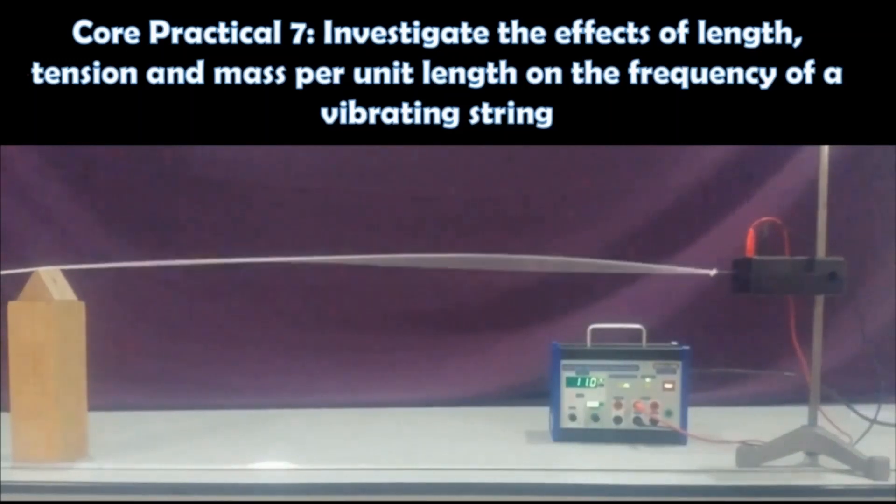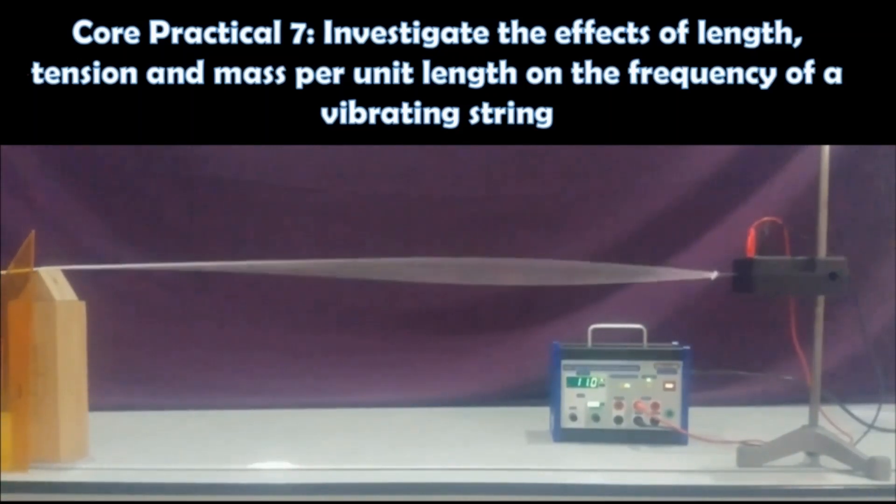At Excel Physics Core Practical 7, investigate the effects of length, tension, and mass per unit length on the frequency of a vibrating string. In front of you, you see one of the modes of vibration, this is the fundamental frequency. What you see on this string is a standing wave. Standing waves are formed when two progressive waves of the same frequency and the same amplitude meet and interfere.